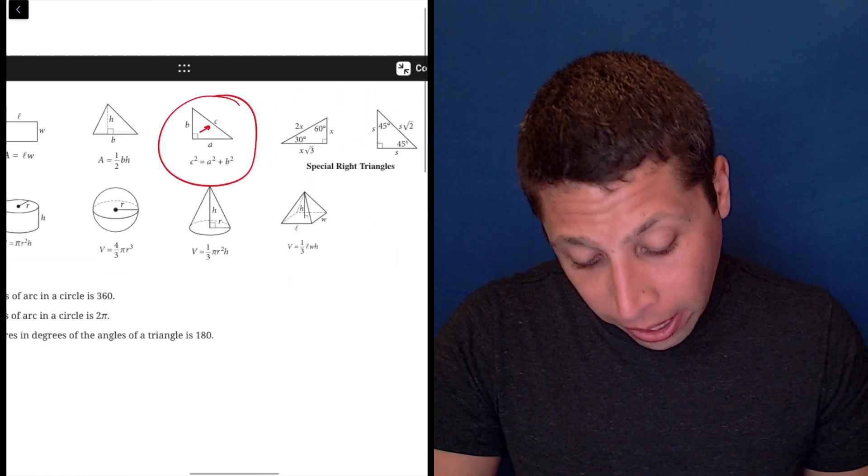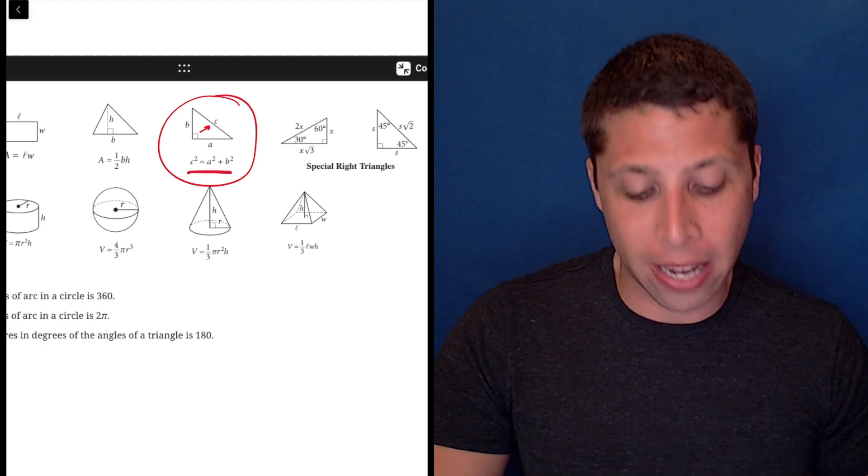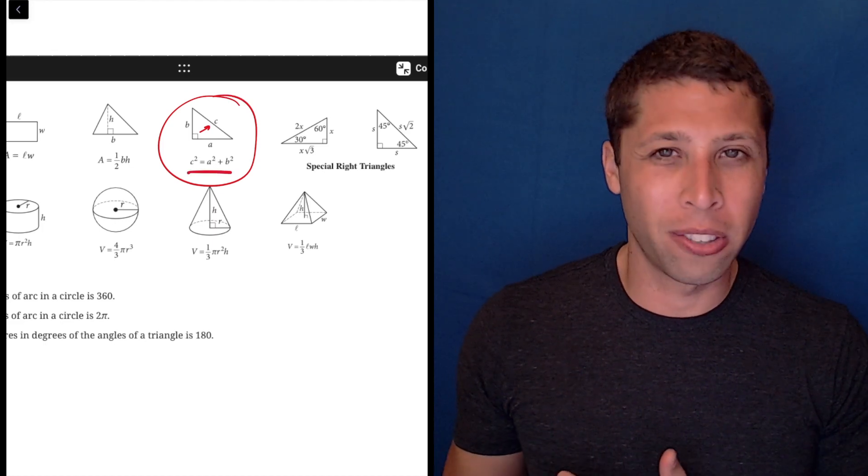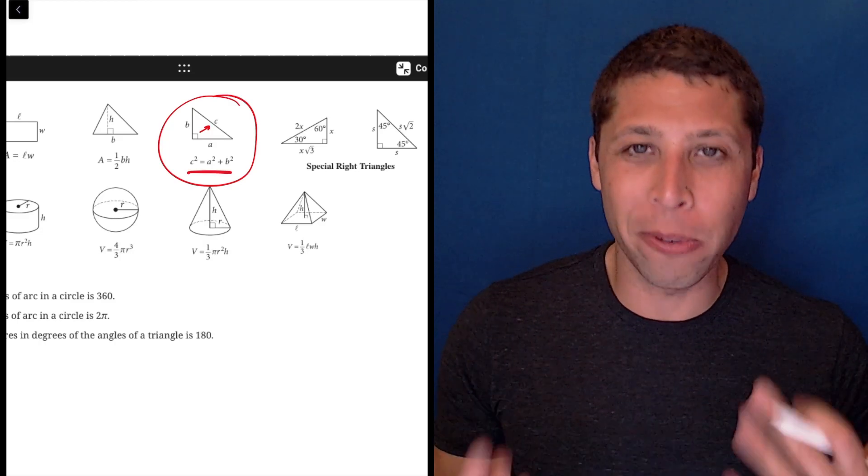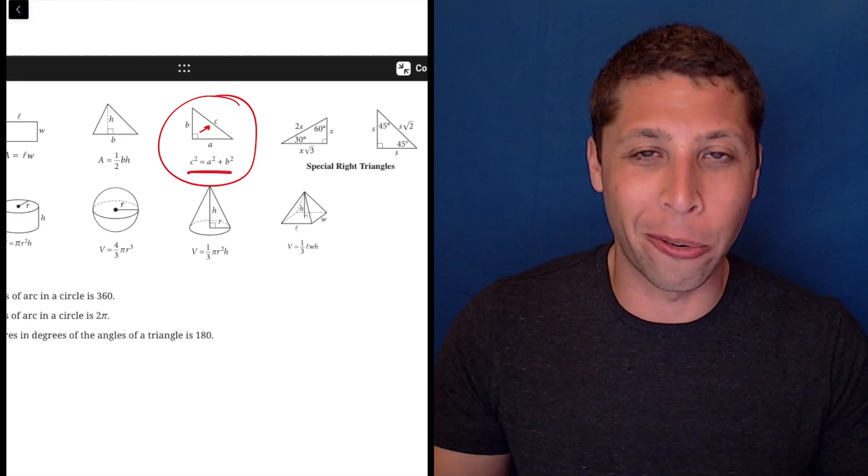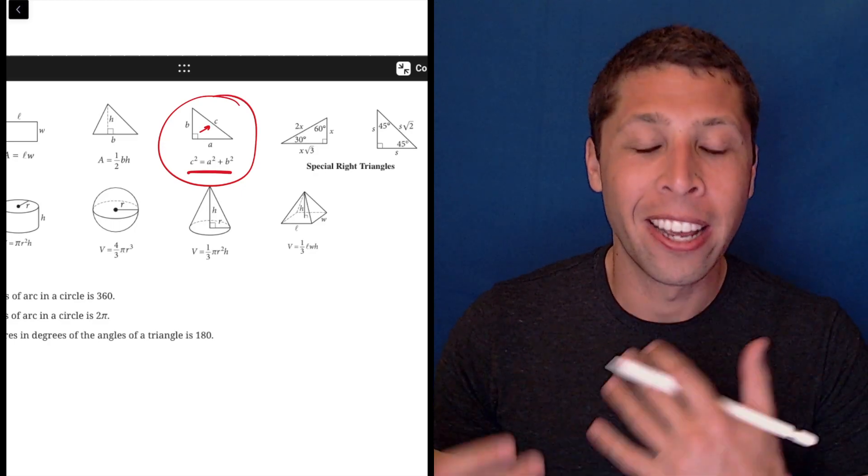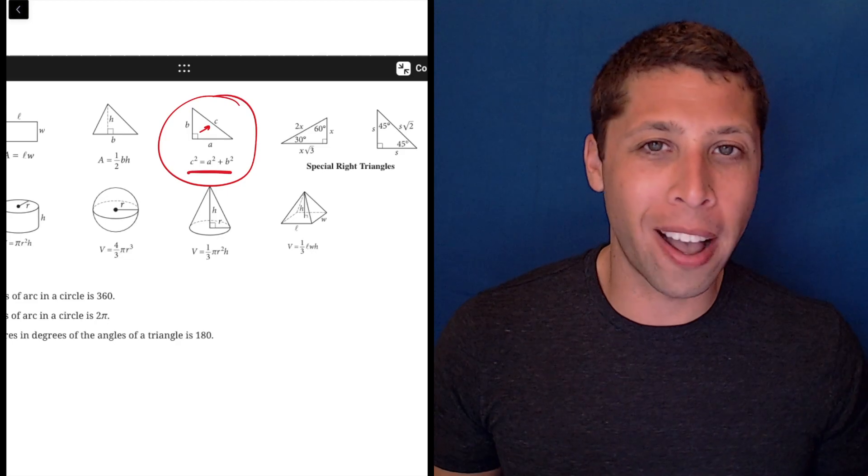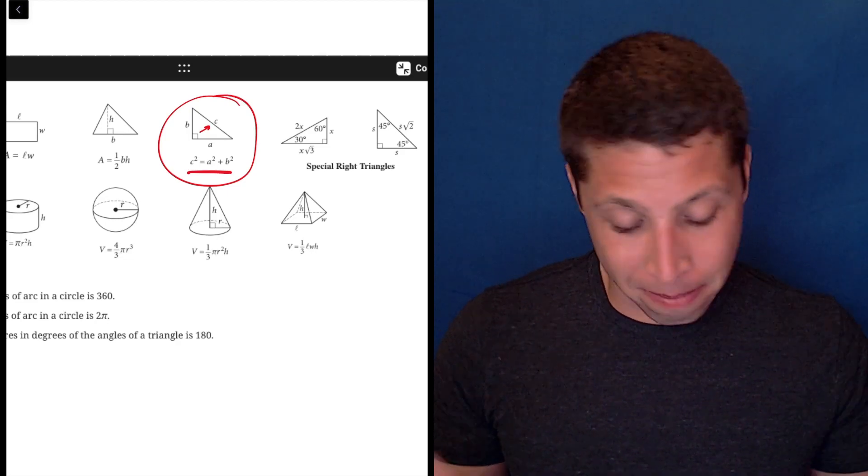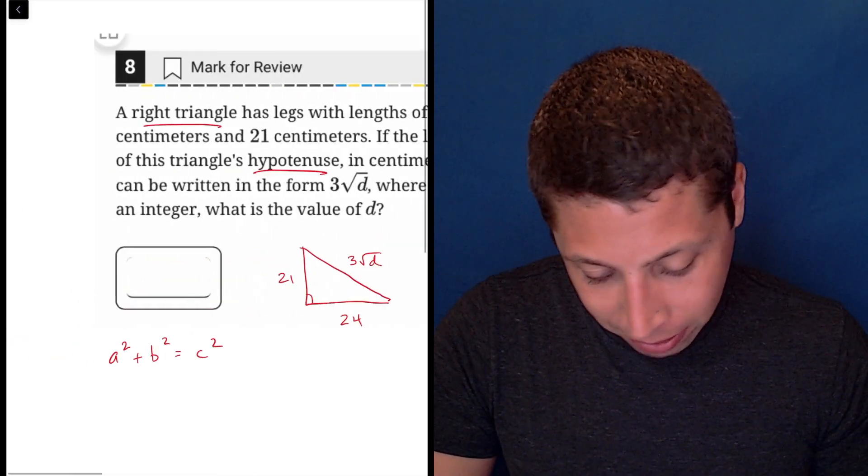One thing that is kind of weird that I don't love that they did in this is they flipped it and put the C first. Is that how any of you learned it? I don't think so. Everyone I've ever taught in math or helped with the SAT has always said A squared plus B squared equals C squared. I have no idea why the reference chart is flipping it, but there you go. It's the same formula. It's just flipped.